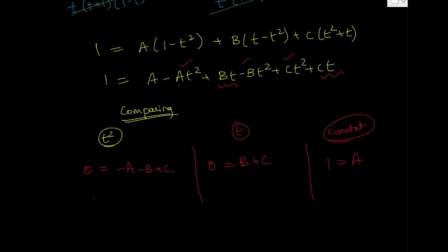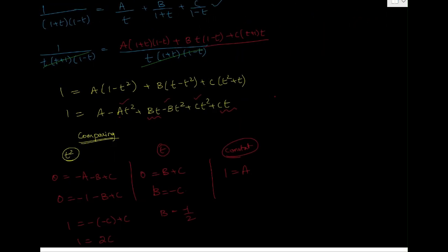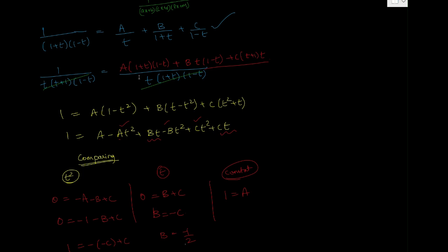Substituting A = 1: from B = C - 1 and B + C = 0, we get (C - 1) + C = 0, so 2C = 1, meaning C = 1/2. Then B = -1/2. So A = 1, B = -1/2, C = 1/2. I will substitute these back into the partial fraction decomposition.